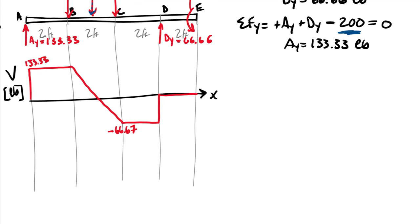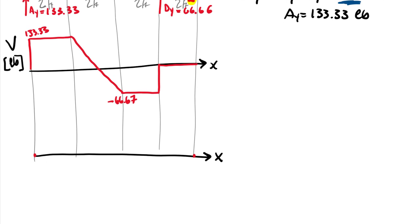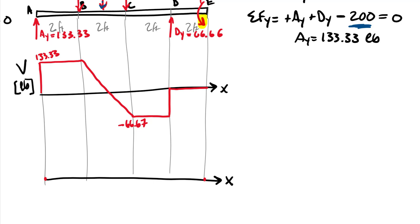For the moment diagram, we need to be careful — there's a couple at the right end, so we anticipate a vertical drop (step) in the moment at point E before it closes to zero. From A to B, positive shear of 133.33 over 2 feet gives an area of 266.66 pound-feet. I then need to find where shear crosses zero in the B-to-C region. Dropping at 100 lb/ft from 133.33, the zero crossing is at 133.33 divided by 100 equals 1.333 feet from B.